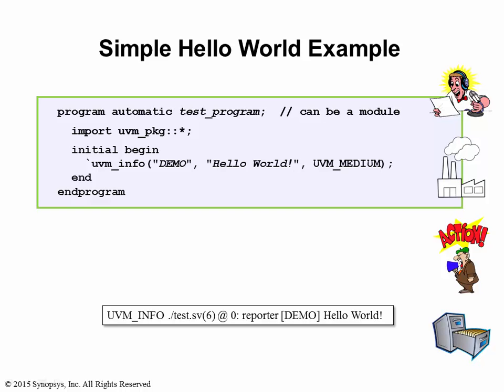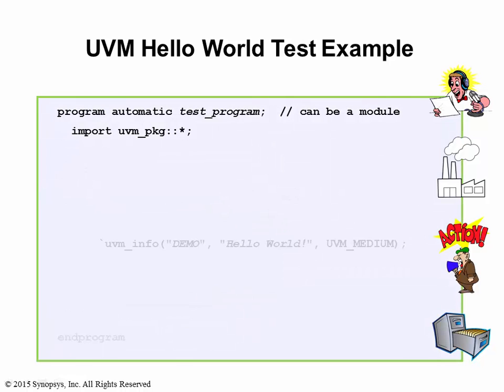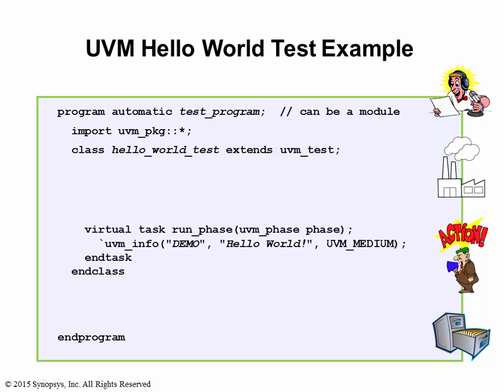We saw that UVMReportServer issues report messages for you. To illustrate the other three service mechanisms, we need to implement UVM tests. Let's move the Hello World message from the initial block into a class derived from the UVM test base class, and call this class HelloWorldTest. Within the class, the functionality of the test is embedded within a predefined UVM method called RunPhase. For UVM tests, think of the RunPhase method as UVM's version of SystemVerilog's initial block.